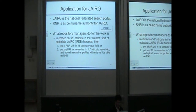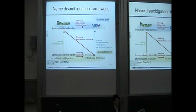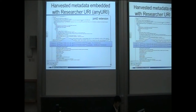We have applied this system to GYLO. GYLO is the national federal search portal. Our system is being used as a name authority for GYLO. This slide shows the combination of GYLO and the Research Name Resolver. The manager should reference the Research Name Resolver as a user ID with researcher identifiers, and put the ID into the metadata of the repositories. This bibliographic metadata is harvested to GYLO, and the creator field is filled with the researcher URL.